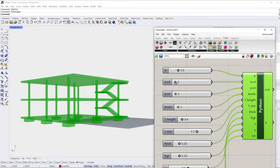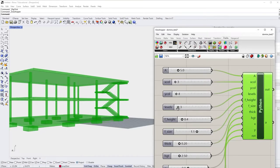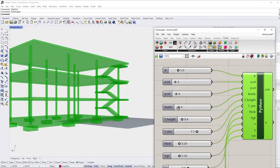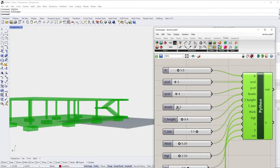It's a simple script that generates a different version of the Maison Domino depending on the parameters I set. The number of floors, the spacing of the columns, the room height, etc. Everything can be controlled with a separate parameter. This is a basic example of a parametric model.